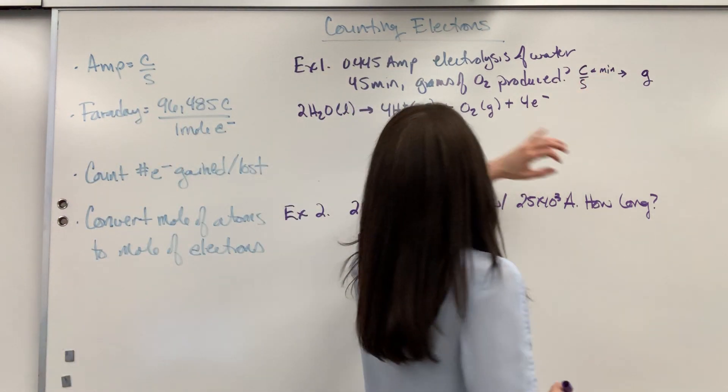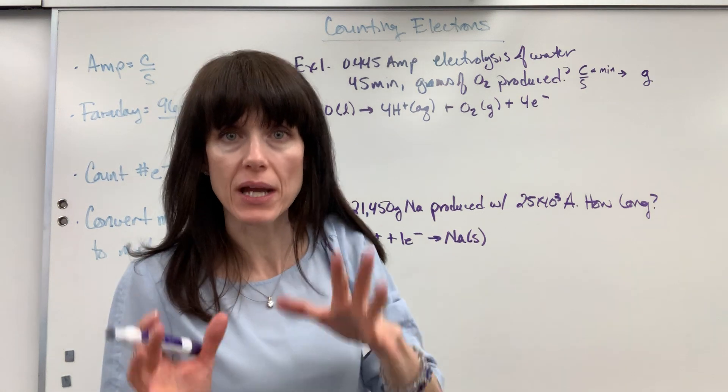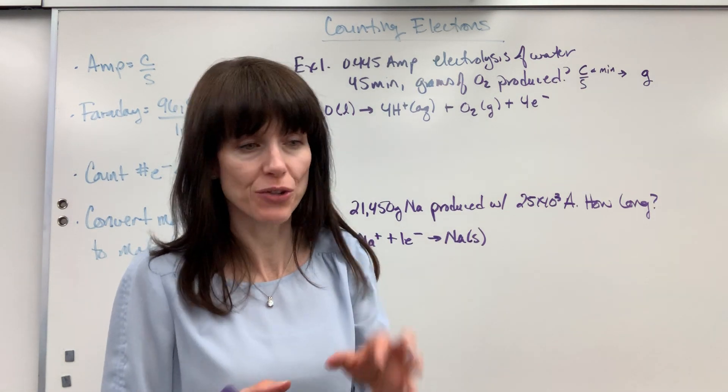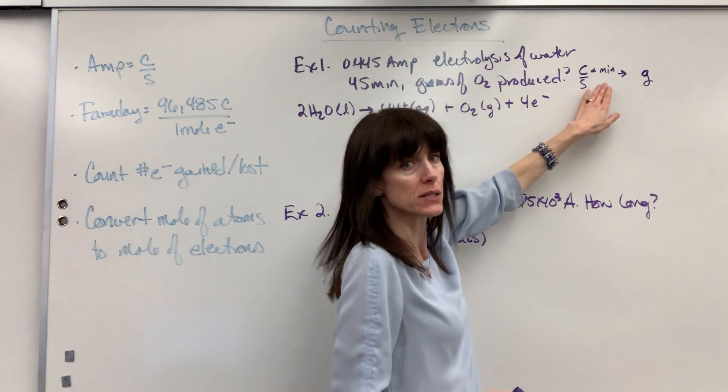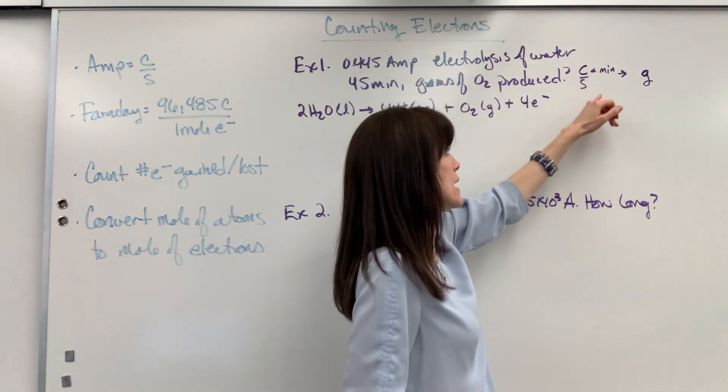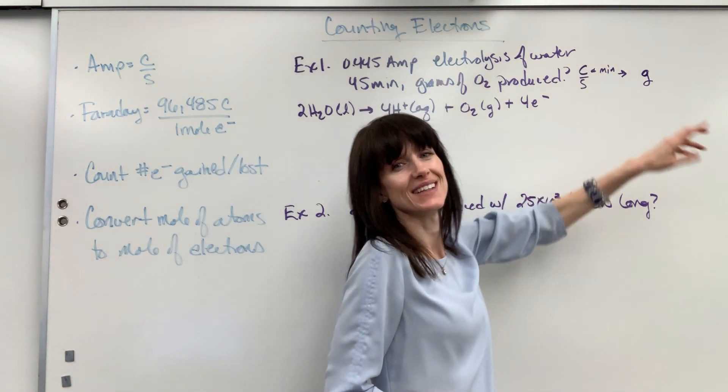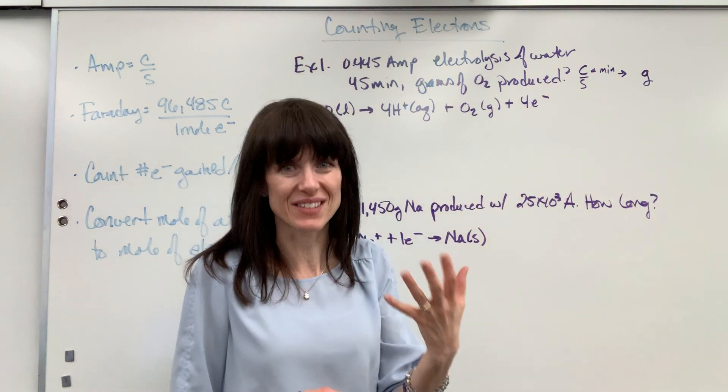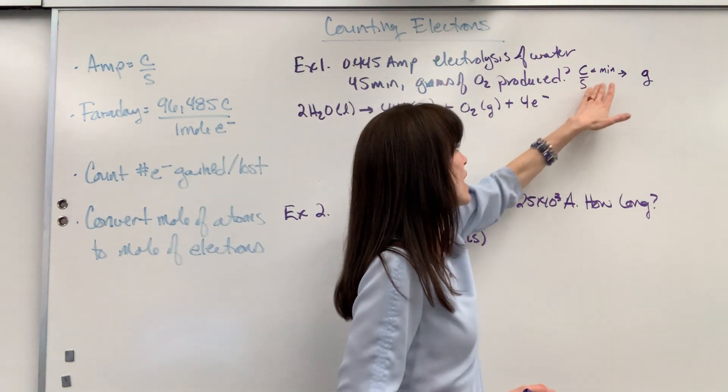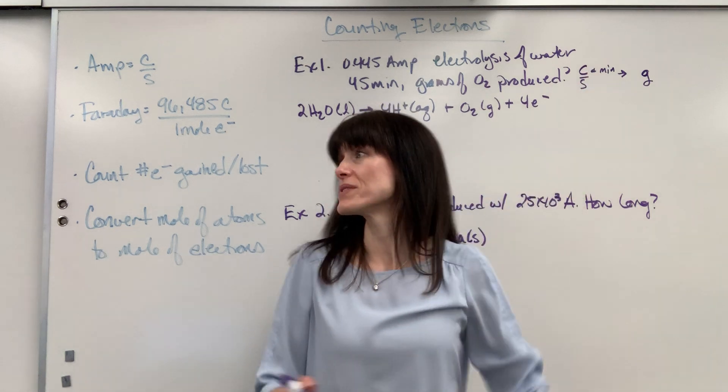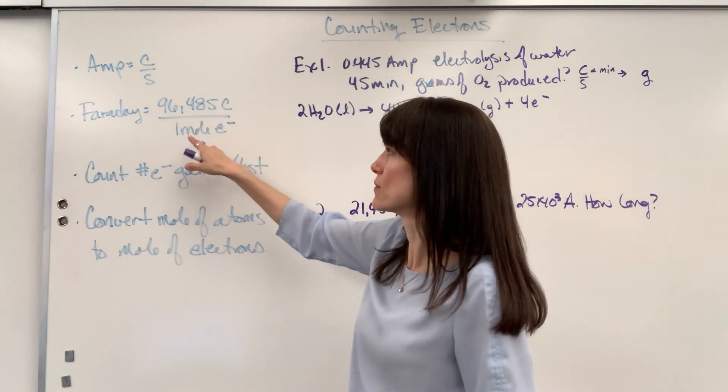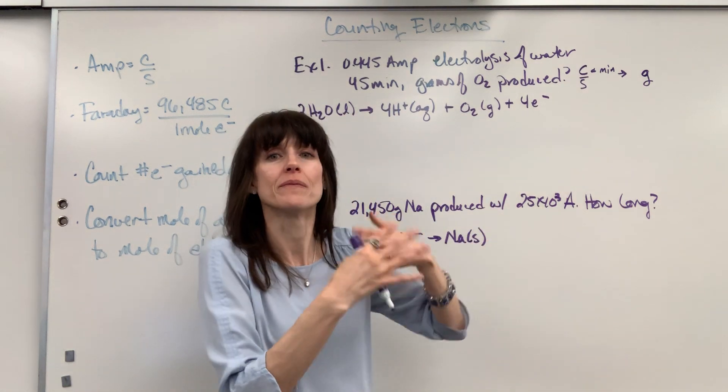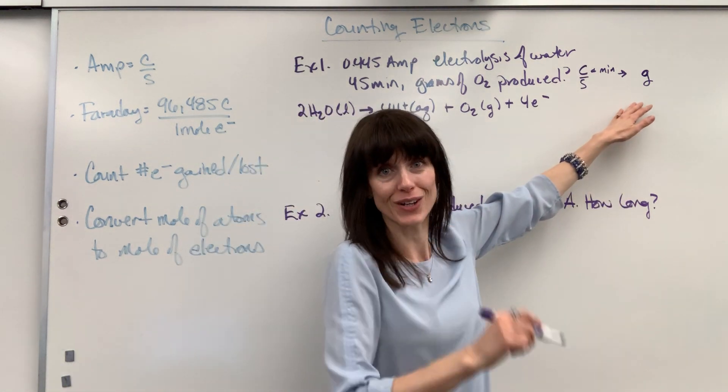So, I have amps. Always break amps into coulombs per second. You've got to be able to see those units. So, I have coulombs per second and minutes. Well, right away, I can say I can get rid of time. And I want grams. So, I start to say, I can see where this is going. If I can get rid of the time, I've got coulombs. I can use Faraday's constant to bring me to moles of electrons. And then from there, eventually get to grams. And I'll show you how to do it.